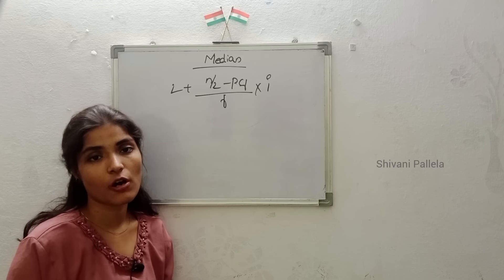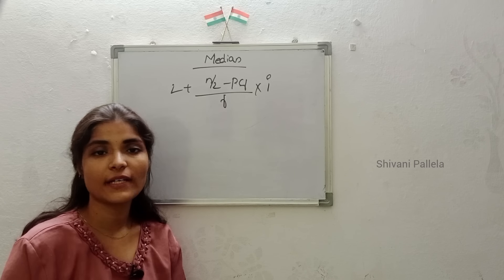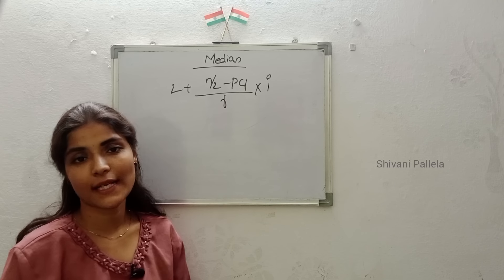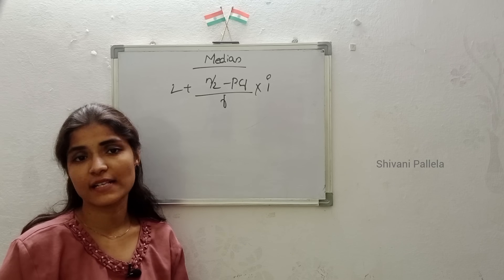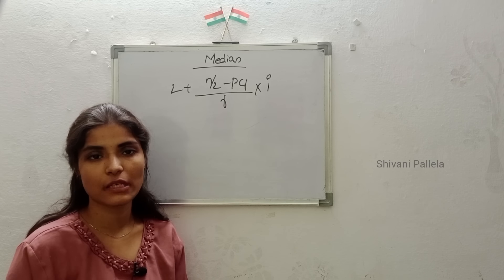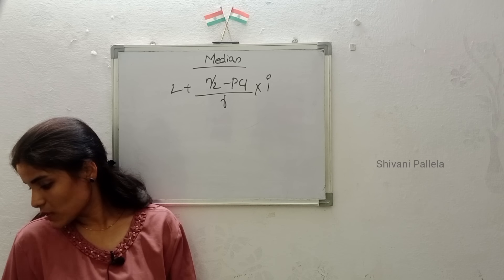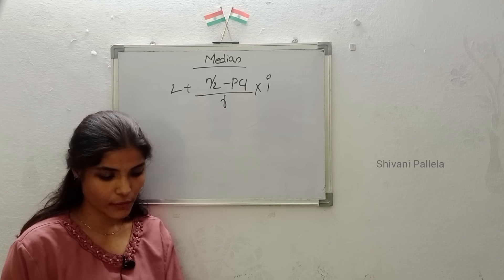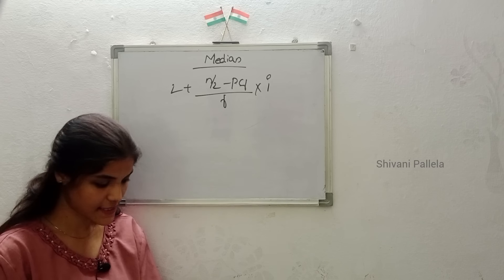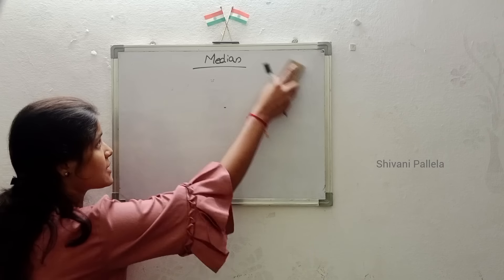Sometimes in the longer question from unit 3, they will ask: 'calculate median and locate quartiles also' or 'calculate median and quartiles from the following data.' Quartiles and median explanation I have already given in Bowley's skewness video. Here I will explain about median with one small example question — just look into that question and it will be clear. Here is the formula.